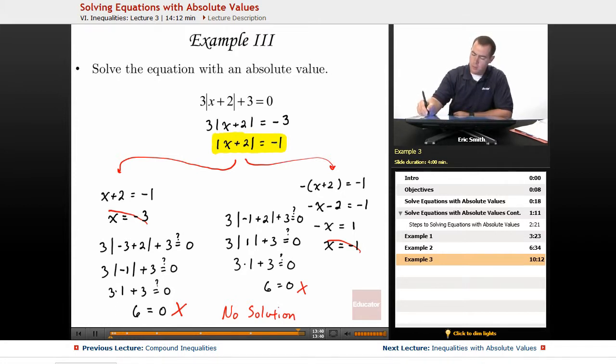Because again, our absolute value on one side will be positive, and on the other side, we're setting it equal to a negative. And we cannot get a positive and a negative to agree. So that's why this one also has no solution.